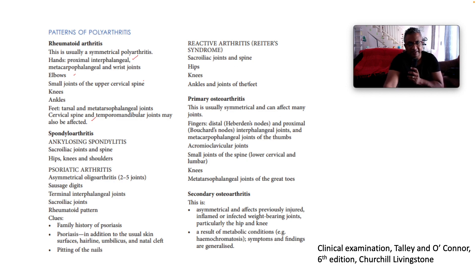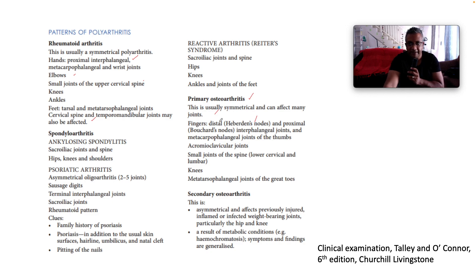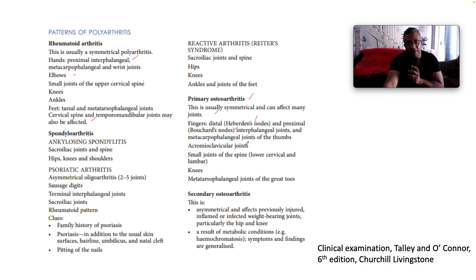A common pattern we see is primary osteoarthritis, which is usually symmetrical. It can affect many joints, but here we see the infamous Heberden's nodes at the DIP joint, the PIP joint with Bouchard's nodes, and metacarpal phalangeal joints of the thumbs — causing squaring of the thumbs. It also involves the acromioclavicular joints, small joints of the spine with a predilection for lower cervical and lumbar regions, knees, and metatarsal phalangeal joints. If you don't have this distribution, it's strongly suspicious for a secondary osteoarthritis.